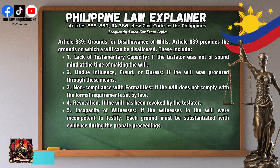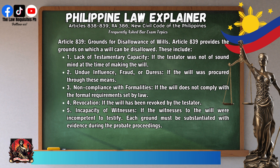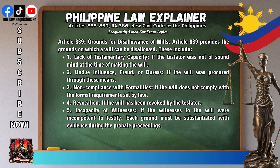Article 839 provides the grounds on which a will can be disallowed. These include: (1) lack of testamentary capacity, if the testator was not of sound mind at the time of making the will; (2) undue influence, fraud, or duress, if the will was procured through these means; (3) non-compliance with formalities, if the will does not comply with the formal requirements set by law; (4) revocation, if the will has been revoked by the testator.